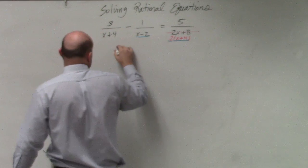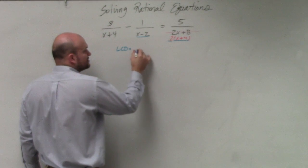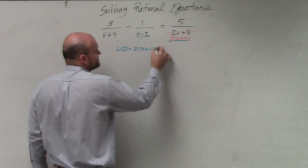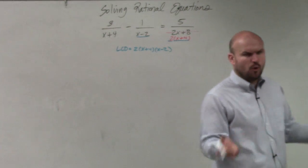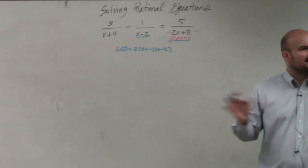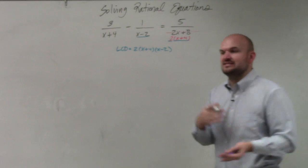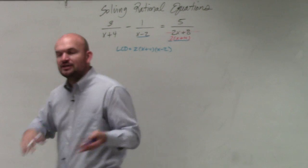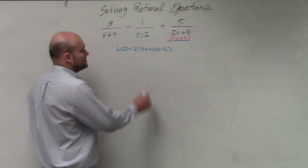So my LCD is just all the uniqueness. So it's going to be 2 times x plus 4 times x minus 2. Now, could you multiply those out? Of course you could. But we're not going to multiply them out because, remember the purpose of this is to use the division property to divide our denominators into our numerator. So we don't want to multiply them out.